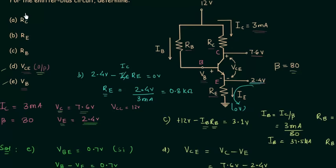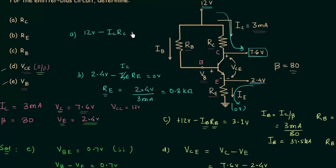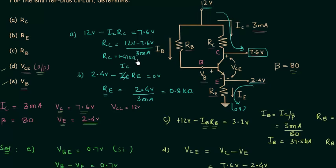Finally, we calculate resistance RC by applying KVL in the collector loop, starting from VCC = 12V down to VC = 7.6V: 12V minus IC·RC = 7.6V. So RC = (12 − 7.6) / 3mA = 1.47 kilohms.